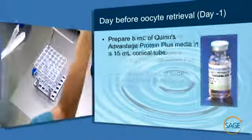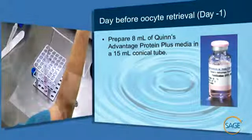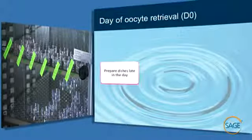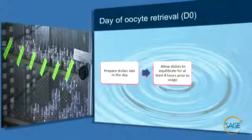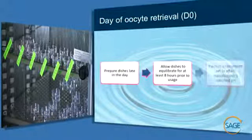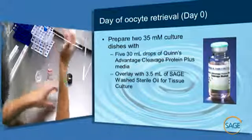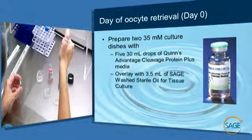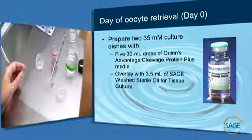To prepare sperm for insemination, 8 ml of Quinn's Advantage Fertilization Plus Media will need to be equilibrated overnight in the incubator. On the day of oocyte retrieval, commonly referred to as day zero, dishes should again be prepared late in the afternoon and allowed to equilibrate for at least eight hours prior to usage on day one, in an incubator set to attain the manufacturer's specified pH. You will need to prepare two 35 mm culture dishes with five 30-microliter droplets of Quinn's Advantage Cleavage Plus Medium overlaid with 3.5 ml of culture oil.